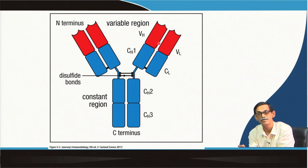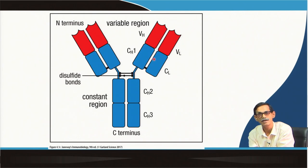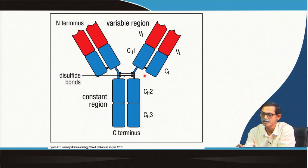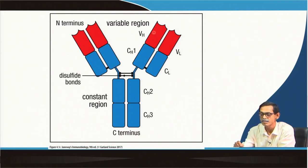If you compare two different antibodies, the blue region is almost similar but the red region is different. Each polypeptide chain has an N-terminal and a C-terminal. The N-terminal region of the heavy chain and the N-terminal region of the light chain determine antigen binding specificity — this is the most variable region, designated VH for heavy chain variable region and VL for light chain variable region.